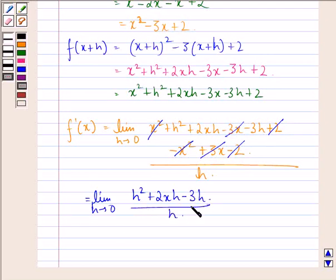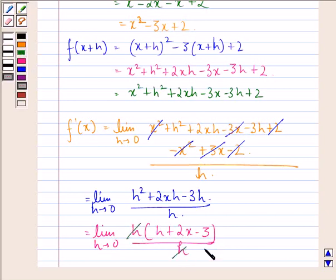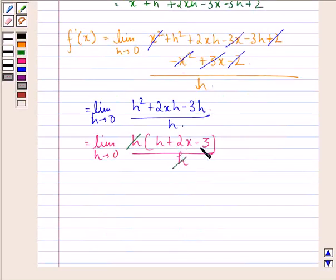Now, taking out h common from these three terms, we have limit h approaching 0, h into (h + 2x - 3) divided by h. Now, we see that h gets cancelled with h and we have h + 2x - 3. Now, if we put h equal to 0, applying the limits, we get 2x - 3.